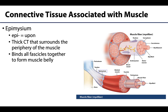And then, continuous with the perimysium, is the epimysium, which will surround the entire muscle belly. So it's going to bind all of the fascicles together. The epimysium — you can kind of see it here — would continue along the entirety of the muscle belly.